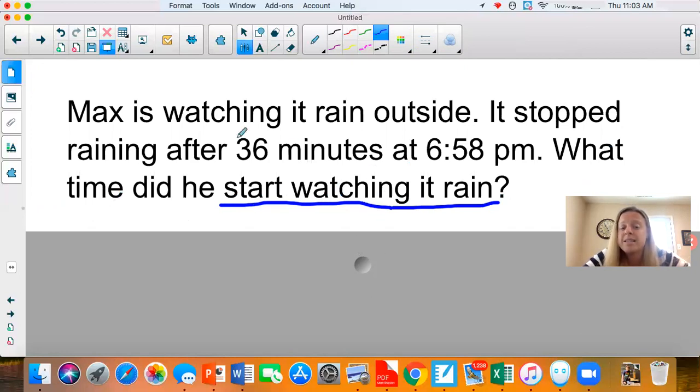I also noticed that it says it rained for 36 minutes. So that's the amount of time between the start time and the end time. It says that it stopped at 6:58 PM. So if it stopped at 6:58, what is that going to be? That is going to be our end time.